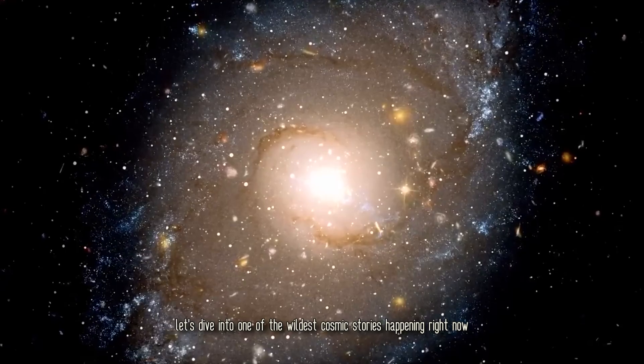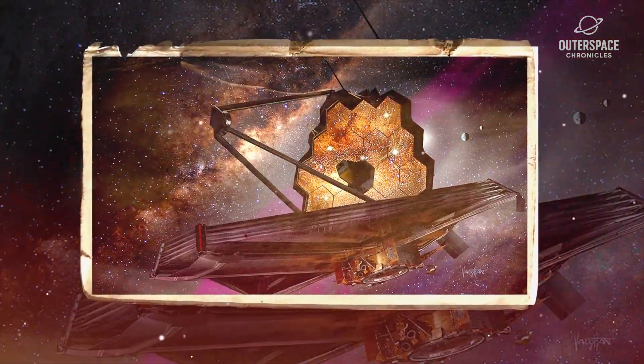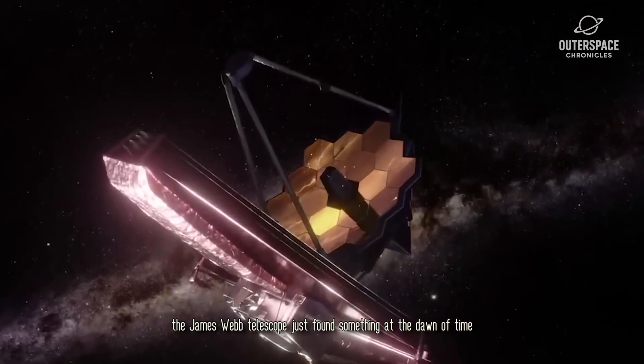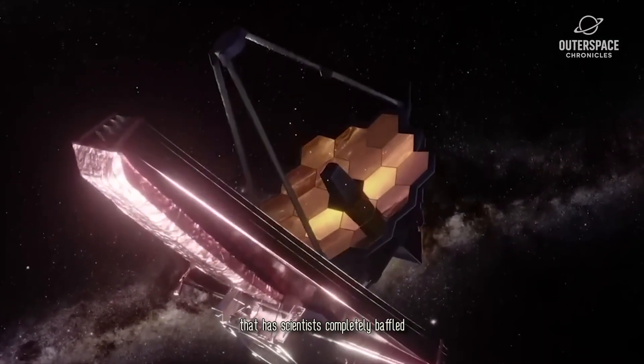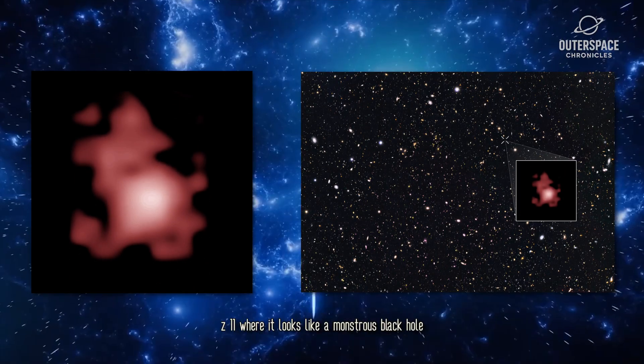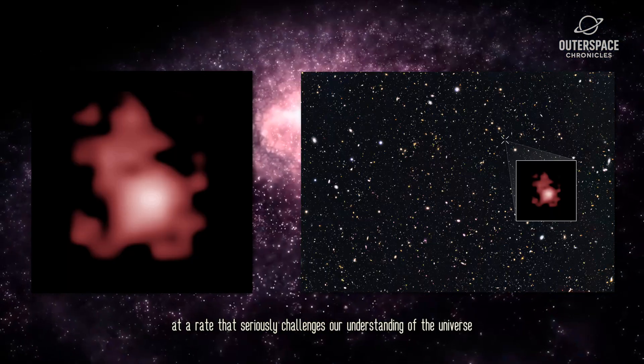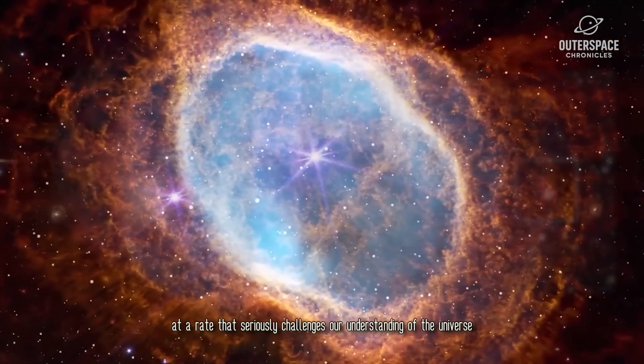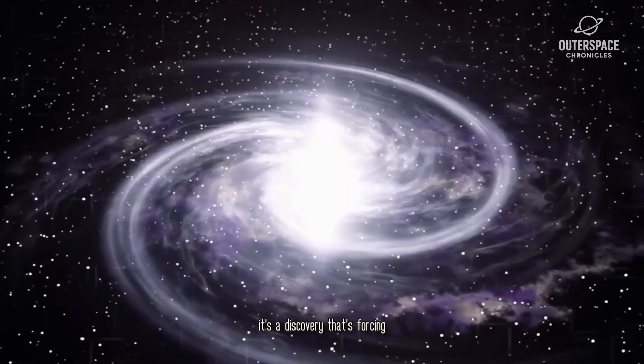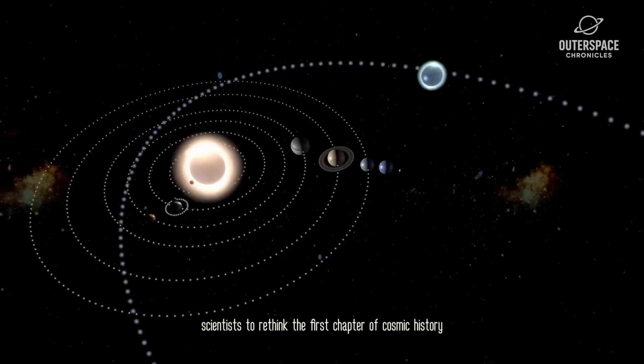Let's dive into one of the wildest cosmic stories happening right now. The James Webb Telescope just found something at the dawn of time that has scientists completely baffled. We're talking about the ancient galaxy GNZ 11, where it looks like a monstrous black hole is growing at a rate that seriously challenges our understanding of the universe. This isn't just a new record, it's a discovery that's forcing scientists to rethink the first chapter of cosmic history.